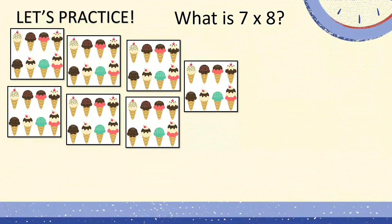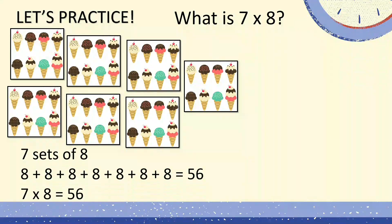What is 7 times 8? We can draw 7 groups of 8 — here you can see 7 sets of ice cream cones, with 8 in each set. If you add 8 seven times, you'll get 56.